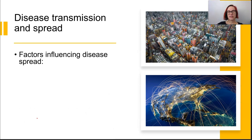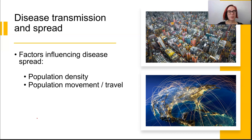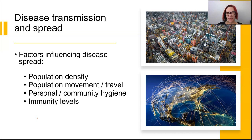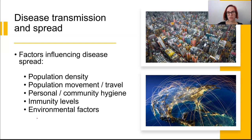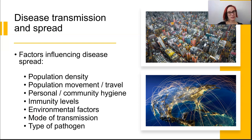Factors that influence disease spread can be related to so many things like population density, population movement — where and how and how often they're traveling — personal and community hygiene, whether those facilities are even available, immunity levels in the community, who's getting vaccinated, environmental factors, where they're living, and the mode of transmission of the particular pathogen and what type of pathogen it is.